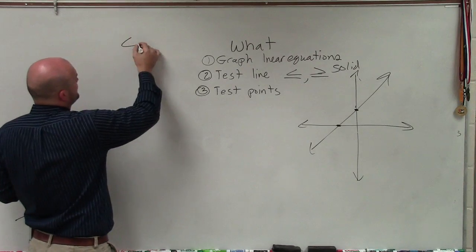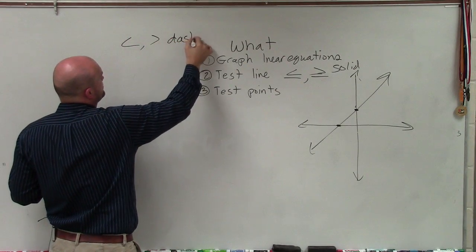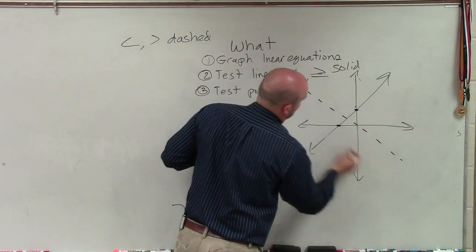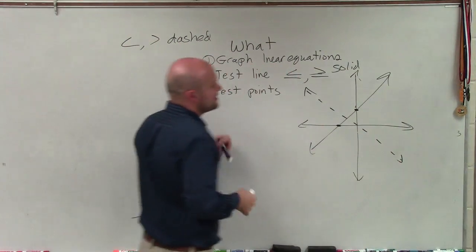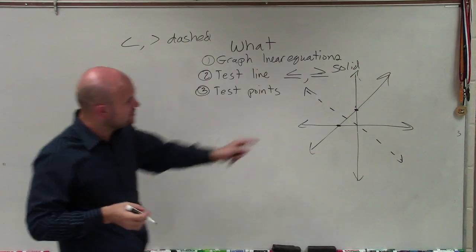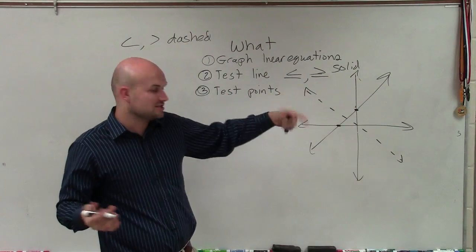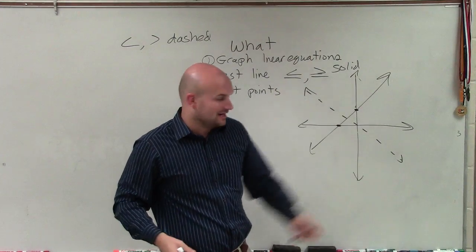However, if it's less than or greater than, that is then what we'll do is we'll give it a dashed line. And that means the points that we choose that are on this line are not going to make your inequality true for your equation. And therefore, they're not a part of the line.